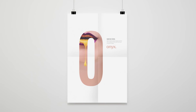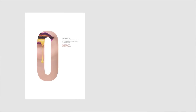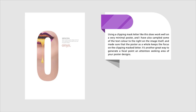I really like the cleanness and minimal nature of this design, where I've used a single letter as a focal point with the utilization of a clipping mask — as you can see on the image, I've captured that in the 'O'. Using a clipping mask letter like this works very well on minimal poster designs. I've also sampled some of the color on the text to the right, and made sure the poster keeps focus on the clipping mask letter, which is a great way to generate a focal point and an attention-seeking area.